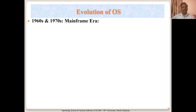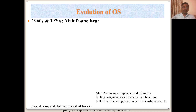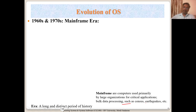First, in the early 1960s and 70s, the mainframe era — a long, distinct period of history. Mainframes were computers used primarily by large organizations for critical applications and data processing, like collecting data from sensors and earthquakes and analyzing huge amounts of data. IBM was very popular building these systems, called mainframes, and OS/360 or Multics was running on them — way back in the 1960s.